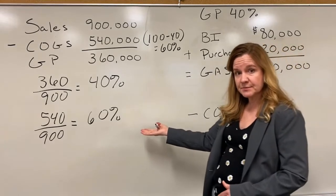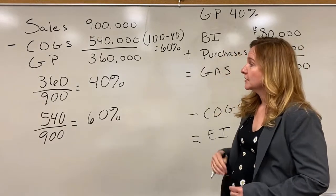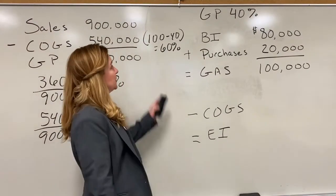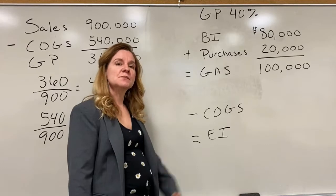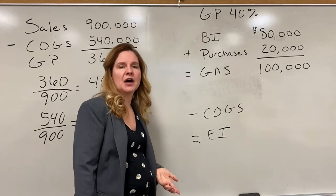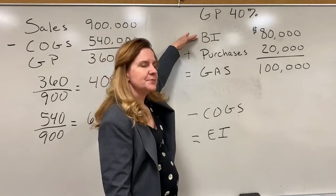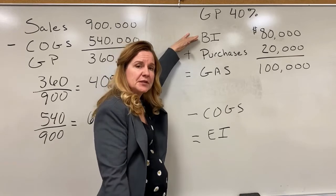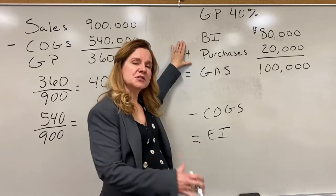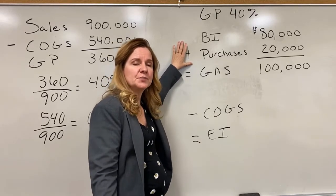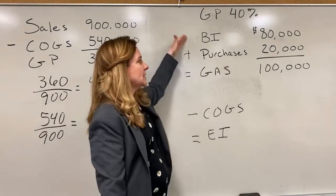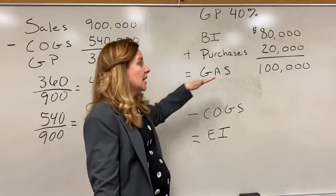Now let's use this percent to calculate an estimate of cost of goods sold to get us to estimated ending inventory. In this example, we assume a gross profit of 40% and sales of $100,000. Beginning inventory of $80,000 would already be in our accounting records, and purchases of $20,000 would also be known. Adding those together gives us goods available for sale of $100,000.